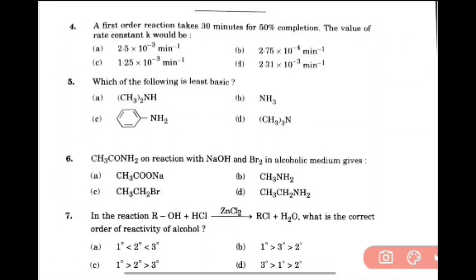Question 4: The first order reaction takes 30 minutes for 50% completion. The value of rate constant will be 2.31 × 10^-3 minute inverse. Question 5: Which of the following is least basic? That will be option C. Question 6: CH3CO-NH2 on reaction with NaOH and Br2 in alcoholic medium will give CH3-NH2 amine.